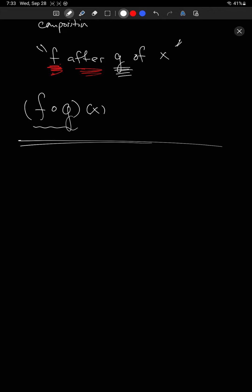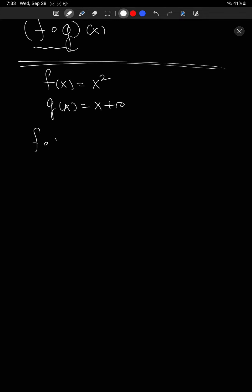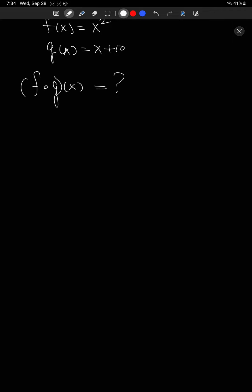Let's do an example. Let f of x equal x squared, and g of x equal x plus 10. What would the formula for f after g of x be? The good news is it's relatively straightforward. You just remember f after g means you do g first — so g of x — and you take the result and put it into f. So f after g of x is equal to f of g of x.